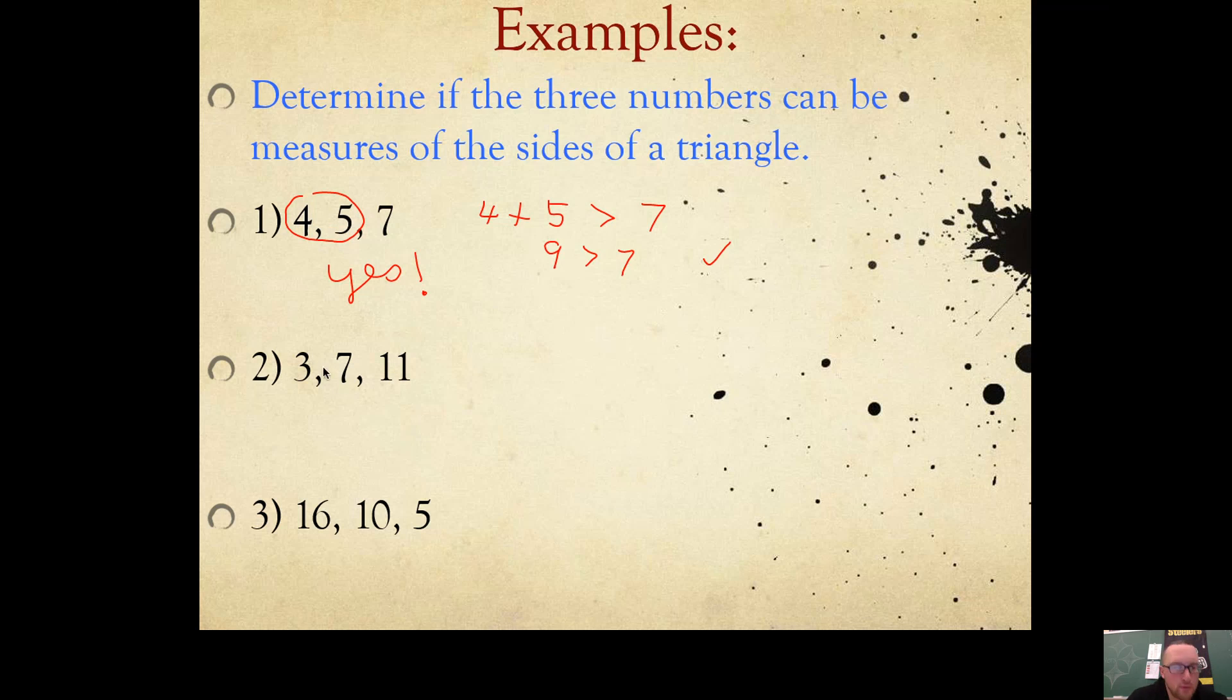Number 2. 3, 7, and 11. Those are segment lengths. Could you make a triangle with those segment lengths? Find your two smallest sides. If you add the two smallest, would it be bigger than the biggest side? 3 plus 7 is 10. Is 10 bigger than 11? No. It's not possible to make a triangle with those segment lengths.